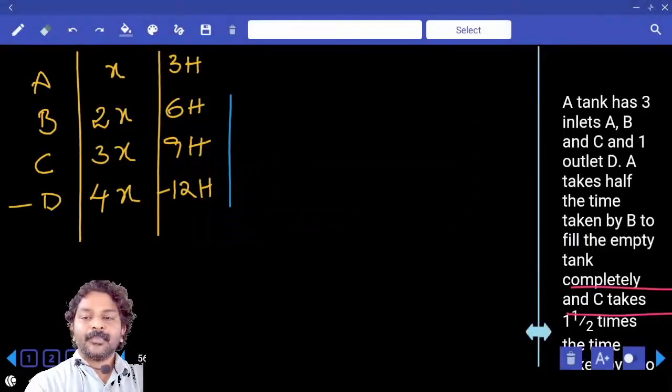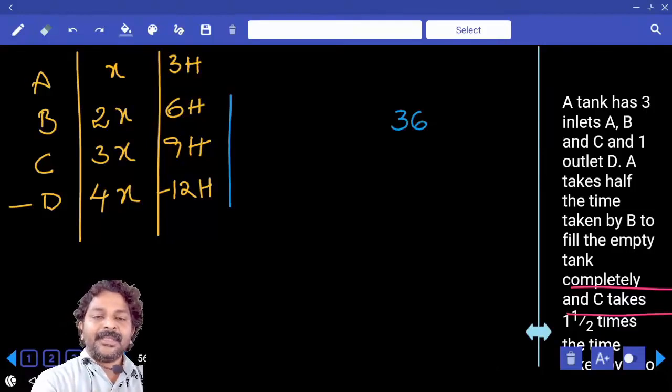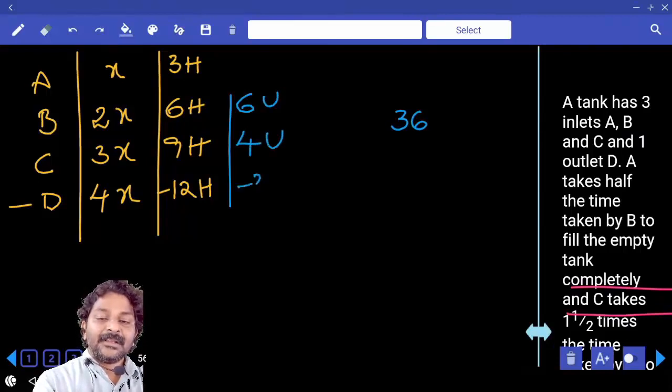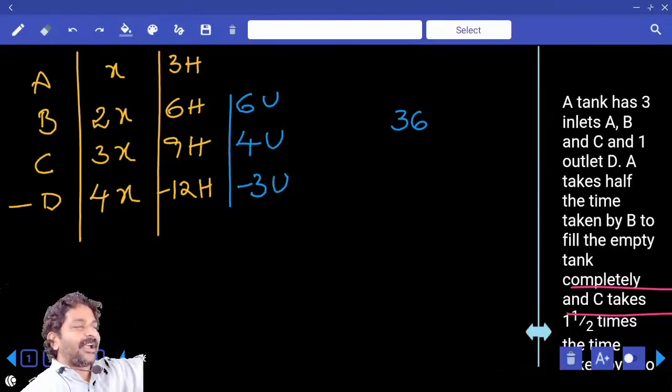6 units, C can fill 4 units, D can empty 3 units. Correct. When B, C, D all three are open, how many units of positive work is done? 7 units of resulting positive work.